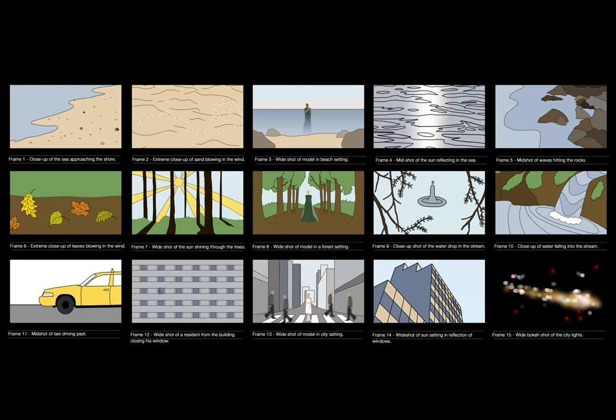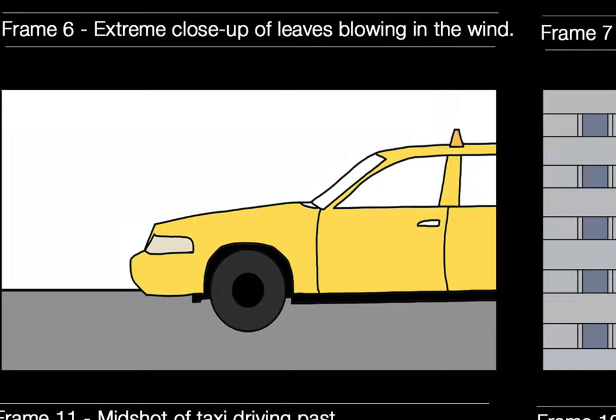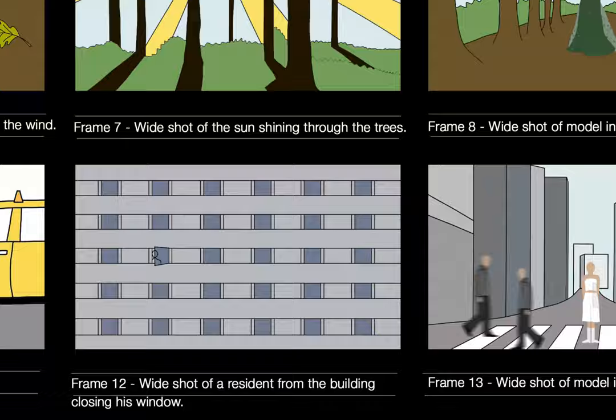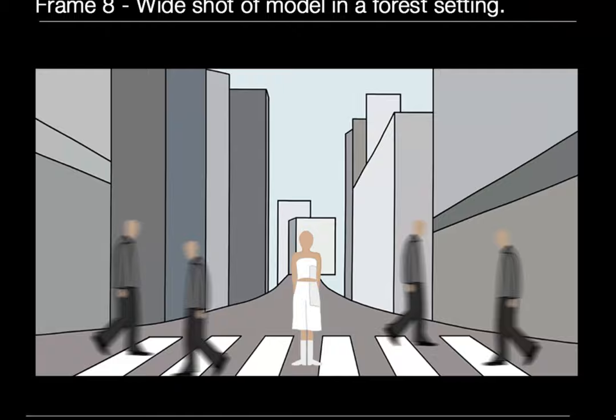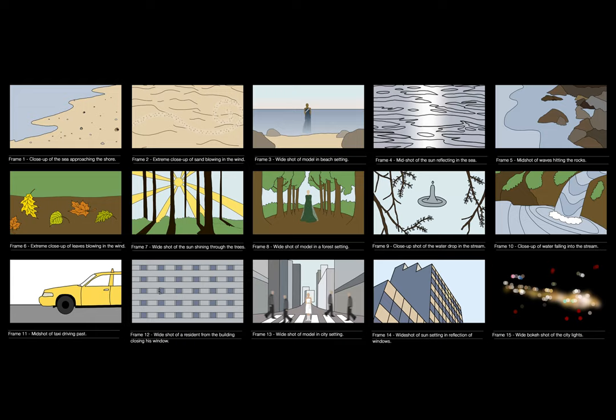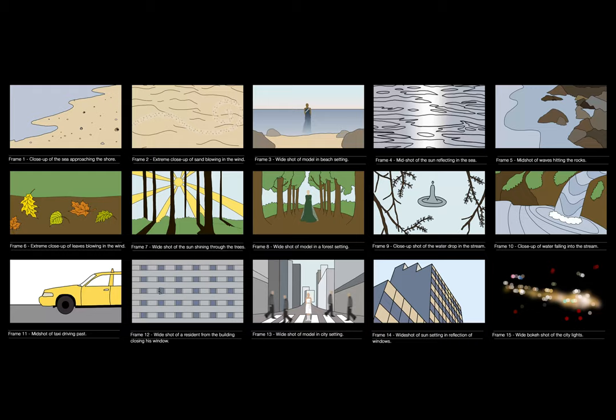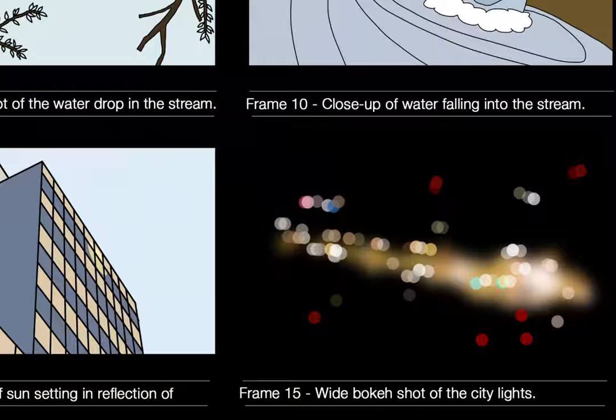Frame eleven will be a mid shot of a taxi driving past, creating a motion blur. Frame twelve will be a wide shot of a resident from one of the city buildings opening his window. Frame thirteen will be a wide shot of the model standing in the centre of a busy crossing in between buildings. Frame fourteen will be a wide shot of the sun setting reflected in the windows. Frame fifteen will be a wide bokeh shot of the city lights at night time, and it will fade out to black at the end.